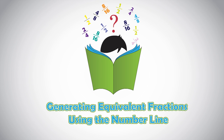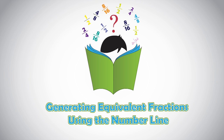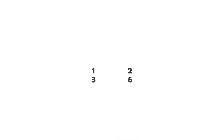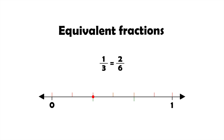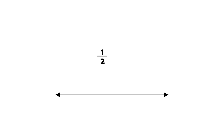Generating equivalent fractions using the number line. We know two fractions are equivalent if they both refer to the same point on the number line. Let's use the number line and represent the two fractions one half and four eighths as an example to check if they are equivalent fractions.